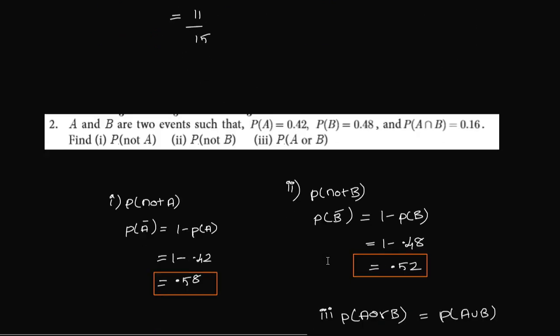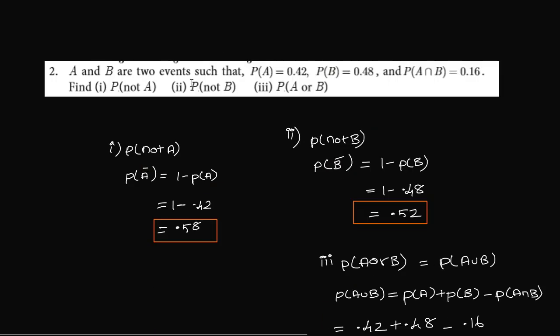Question number 2 in this video. A and B are two events such that P(A) and P(B) and P(A intersection B) values are given. We have to find P(not A), P(not B), P(A or B).